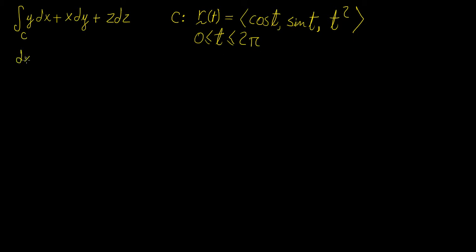So dx/dt, we're going to take the first component of this parametric curve and differentiate with respect to t. This becomes minus sine of t. Then we're going to do the same for y, so dy/dt, we differentiate this element, this gives us cosine of t.